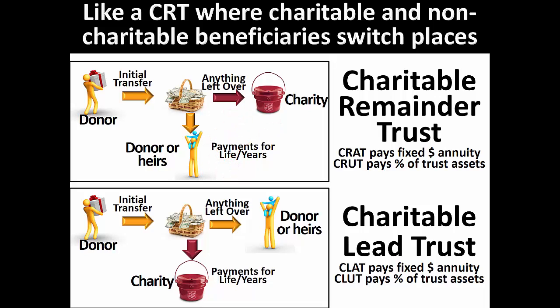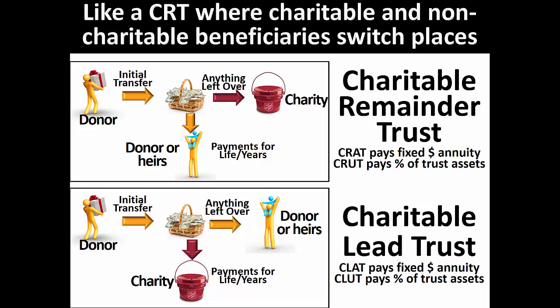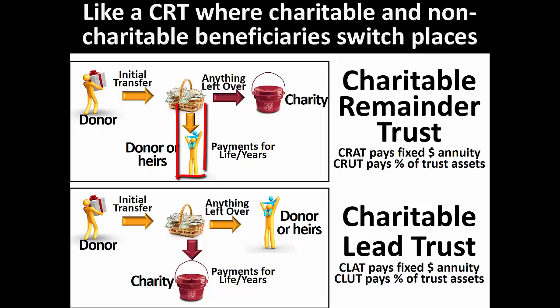Just as with a charitable remainder trust, there are two types of permitted payments from a charitable lead trust: the fixed dollar annuity and the fixed percentage unitrust. If the charitable lead trust pays a preset dollar amount to charity each year, it is a charitable lead annuity trust, CLAT. If the charitable lead trust pays a set percentage of all trust assets each year, it is a charitable lead unitrust, CLUT.